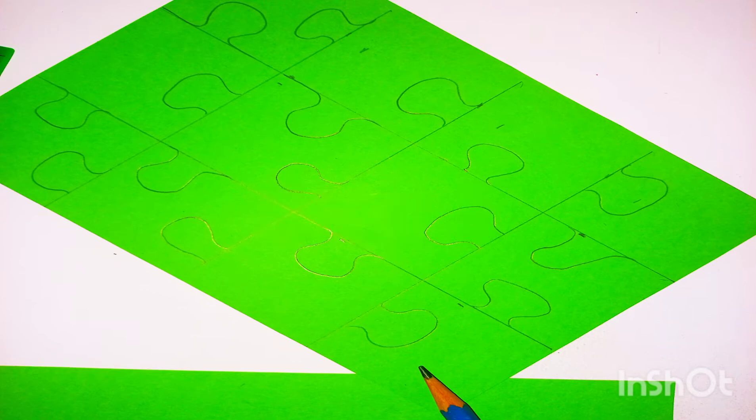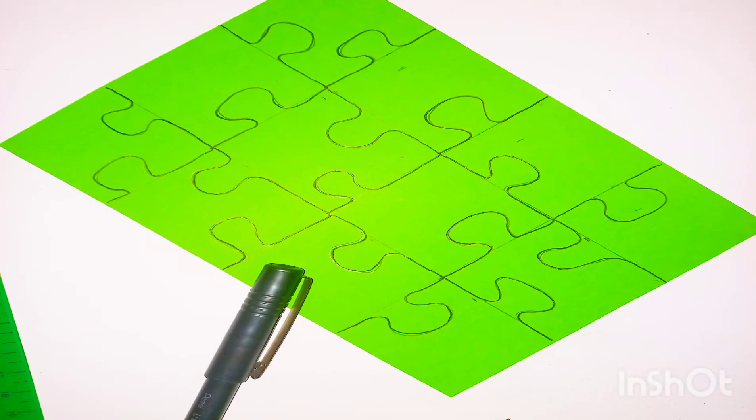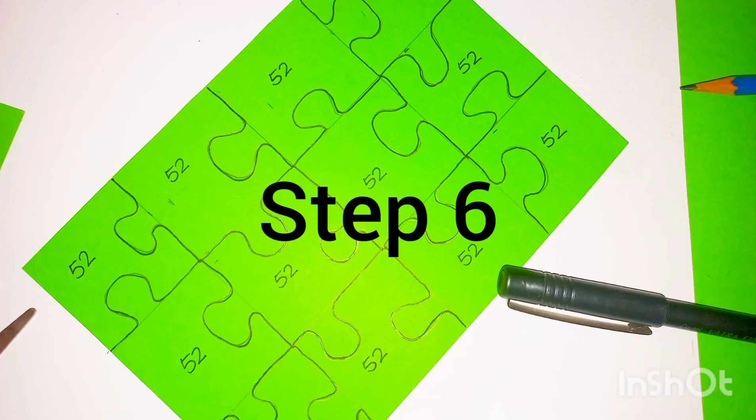Use your black pen to draw in each puzzle piece. Now write in the number of your puzzle on the back of each piece.